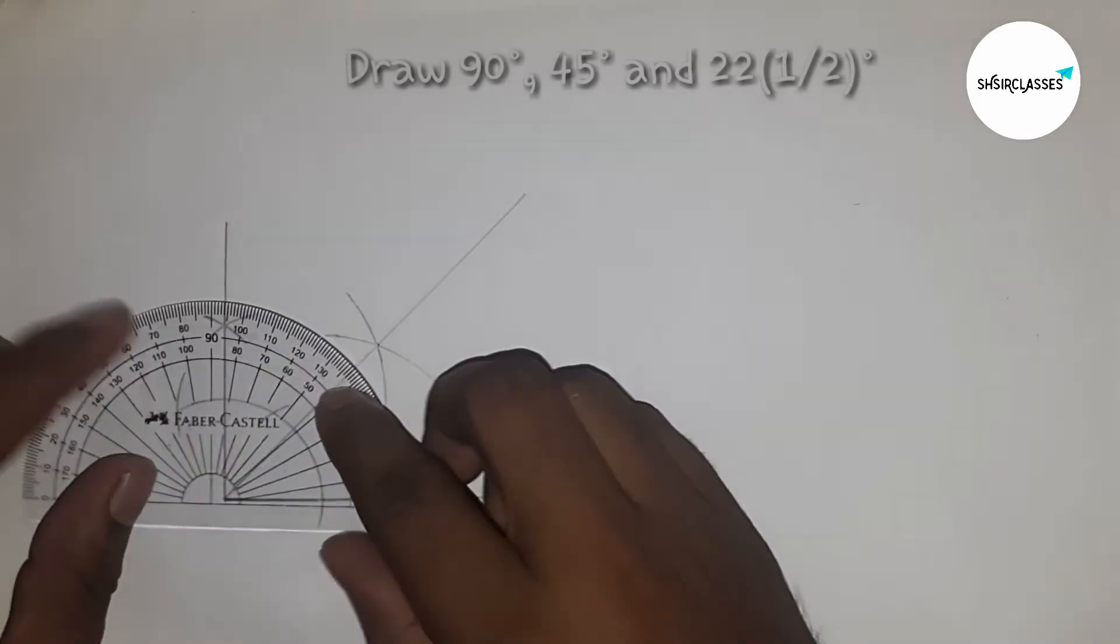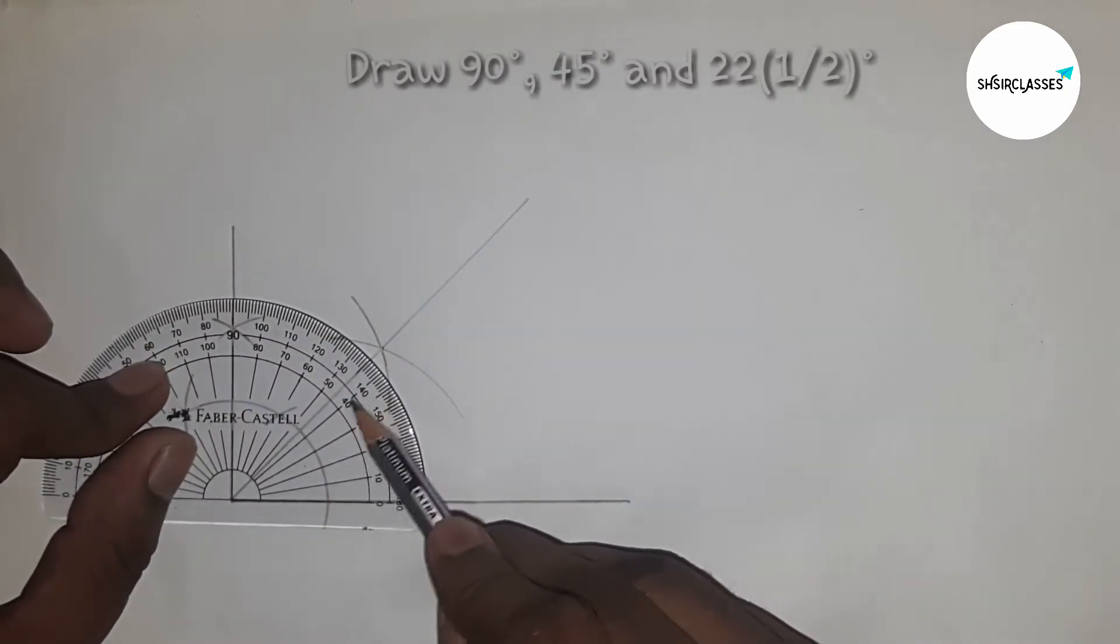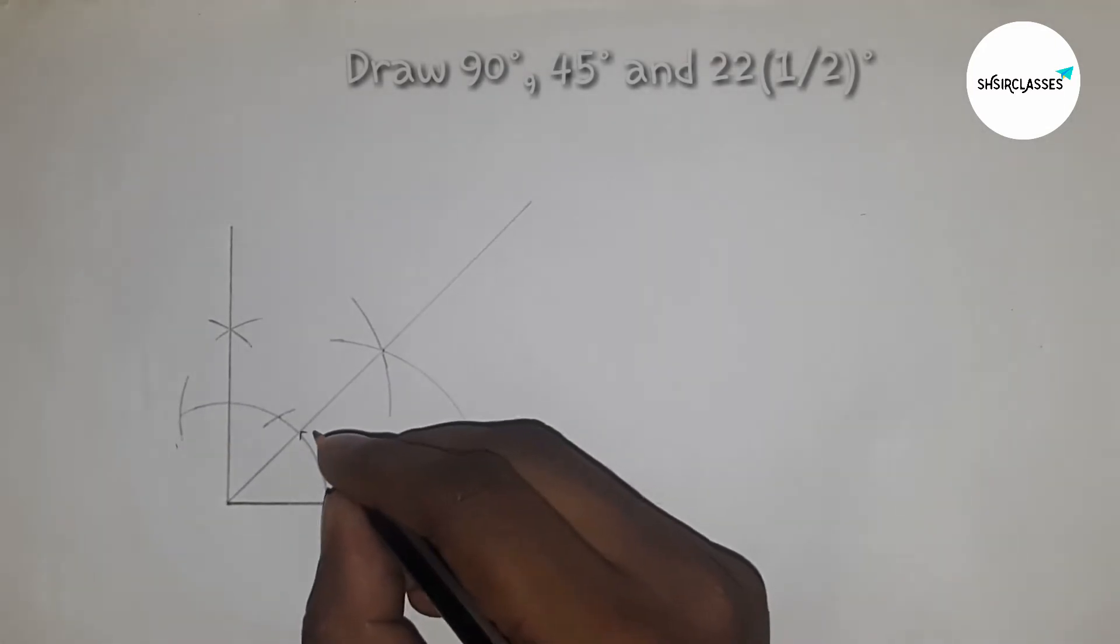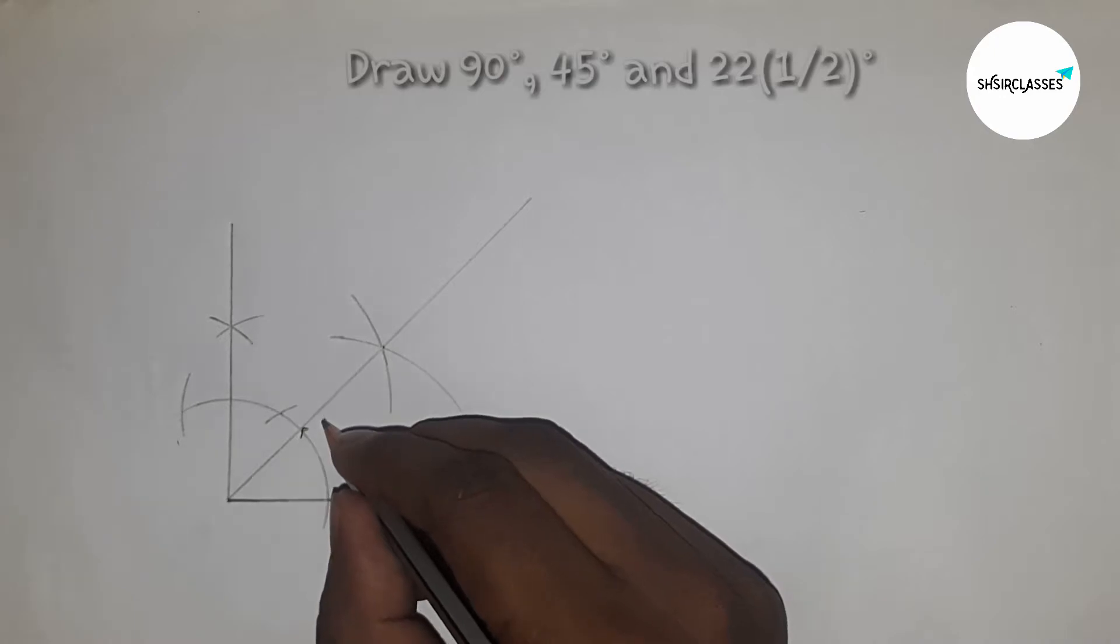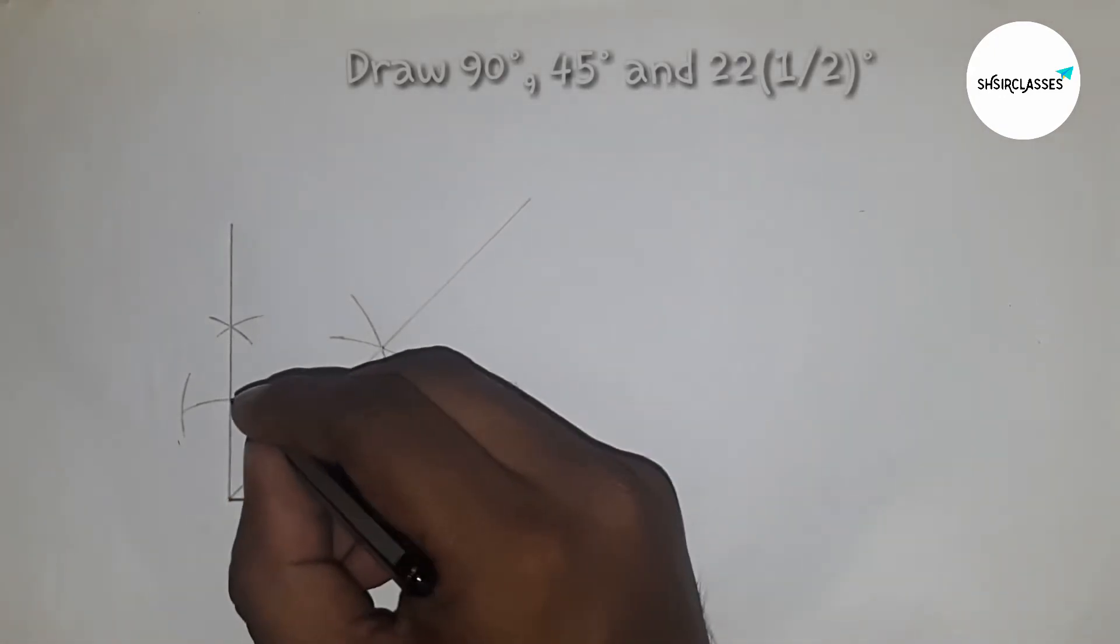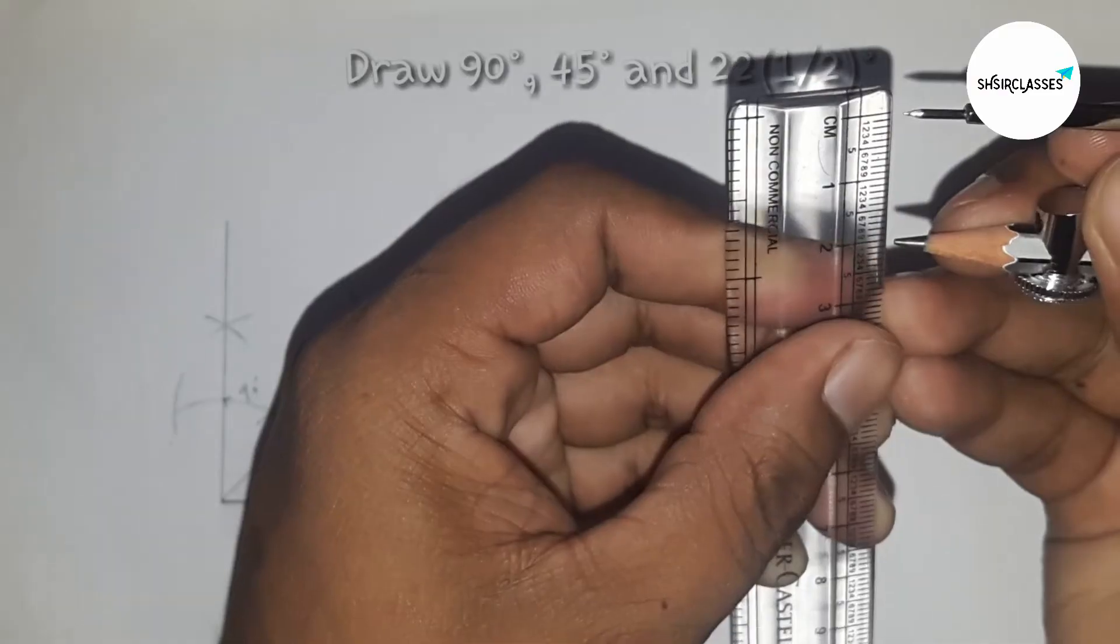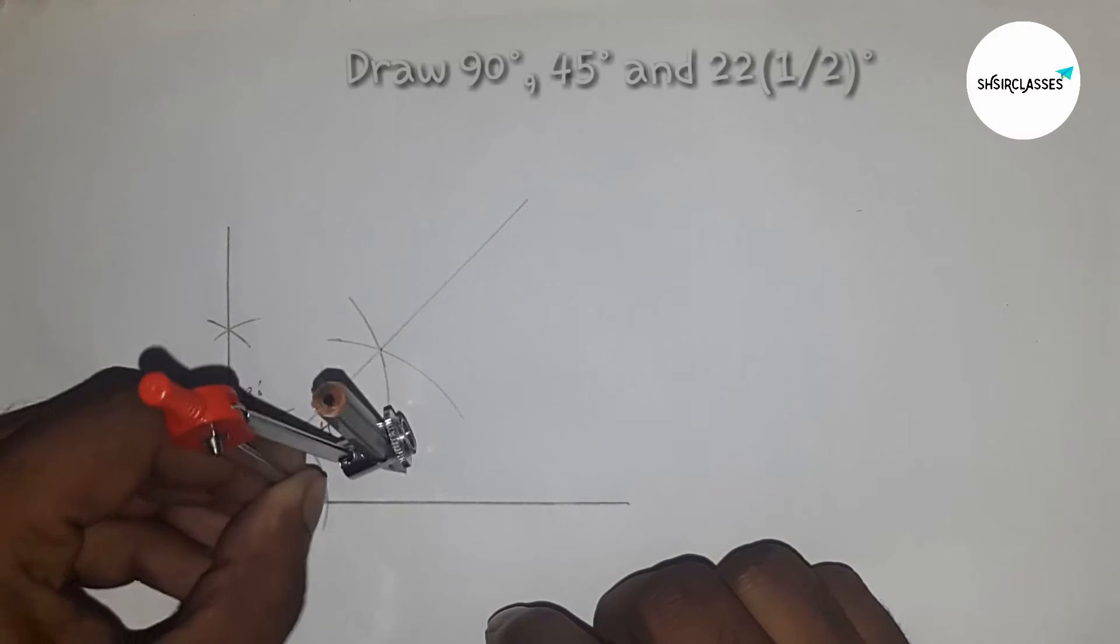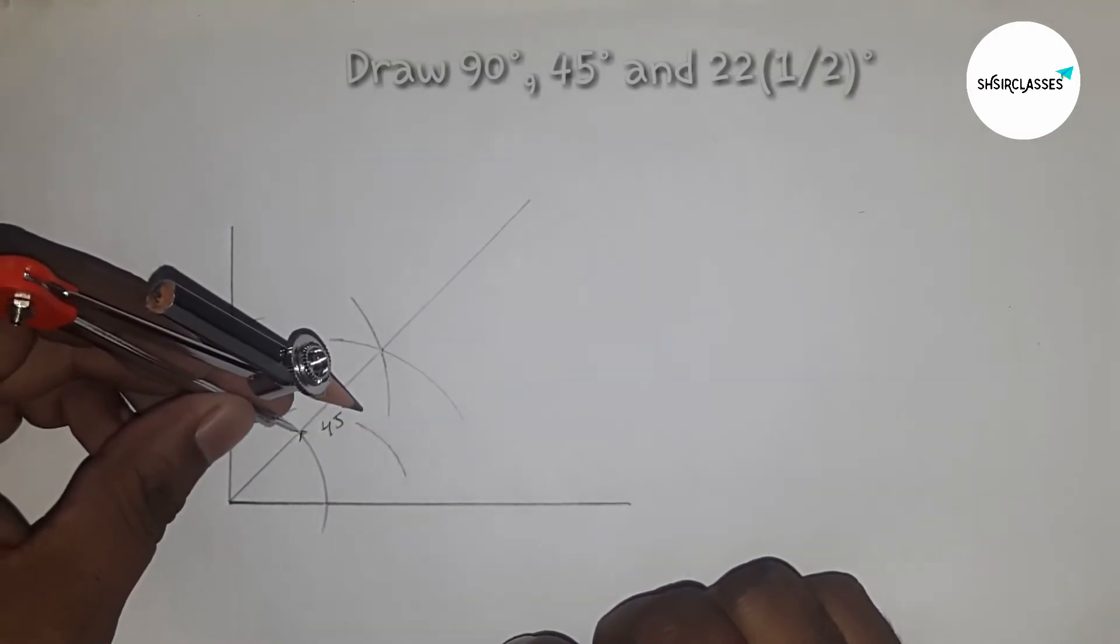Now I'm going to check whether it is correct or wrong. It's okay, so it is 45 degrees and this is 90 degrees. Now I'm going to take two centimeters, putting here and drawing a curve with the same length.